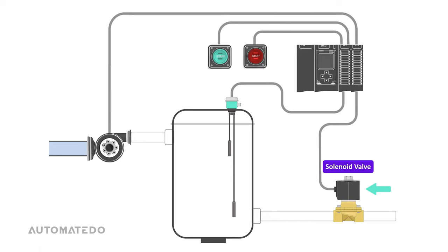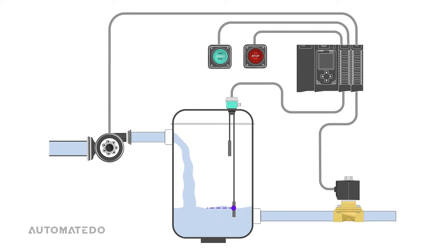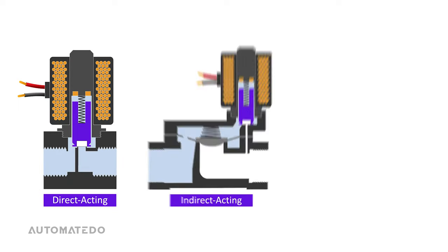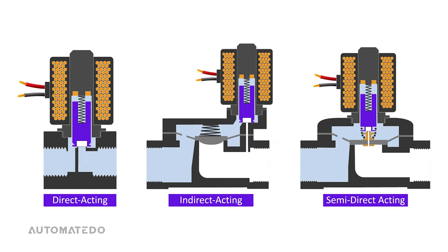Finally, we look at an industrial application where the solenoid valve controls the liquid level in a tank. When the start button is pressed, the pump motor turns on and fills the tank. When liquid reaches the first probe, the conductivity level sensor sends a low level signal to the PLC, which closes the solenoid valve. When liquid reaches the second probe, the PLC receives a high level signal, turns off the pump, and opens the solenoid valve to let the tank level fall.